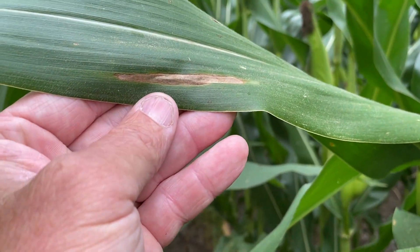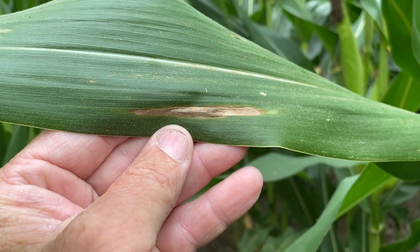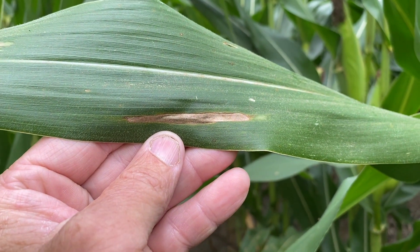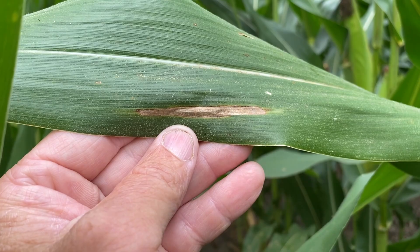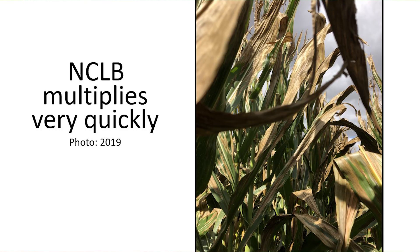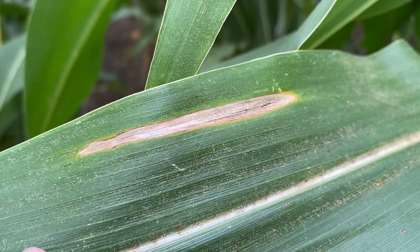Northern corn leaf blight, while it occupies one lesion, can occupy a much higher percentage of leaf versus gray leaf spot. It can also multiply much, much quicker than gray leaf spot — it can go from spore to spore three times faster. About every seven to ten days, it has the capability — if conditions are right for infection — and it is much more invasive if nitrogen is a limiting factor.